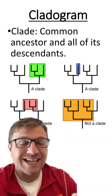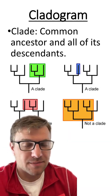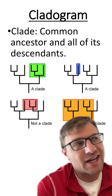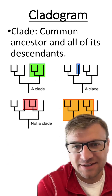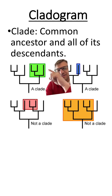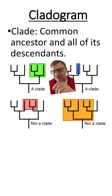Now, it's important to know what a clade is when talking about cladograms. A clade is a common ancestor and all of its descendants. So you can see this common ancestor and all of its descendants, and this common ancestor and all of its descendants.